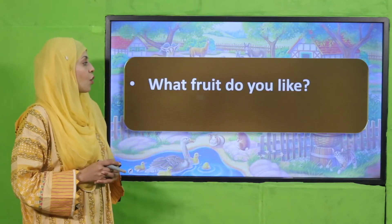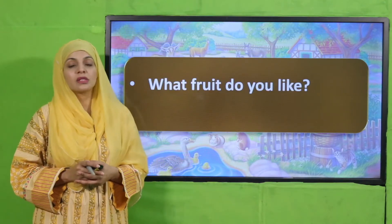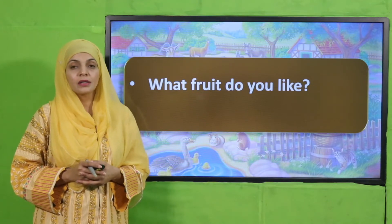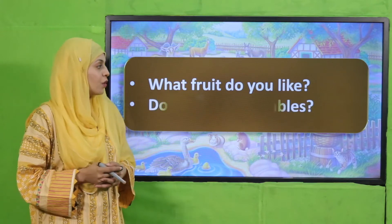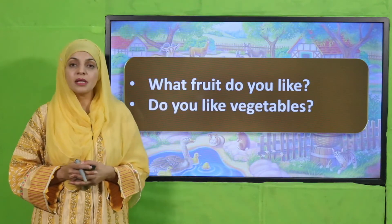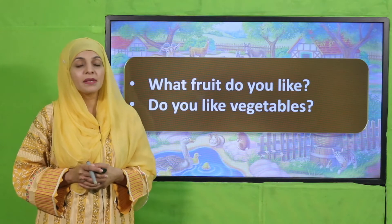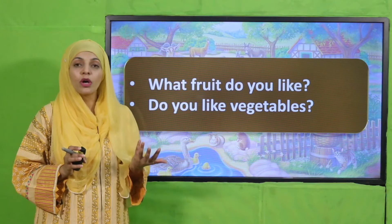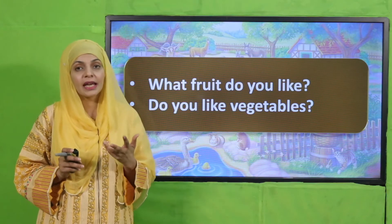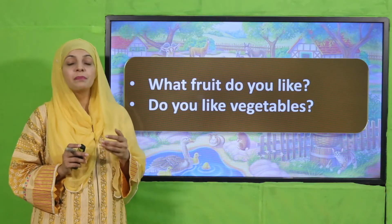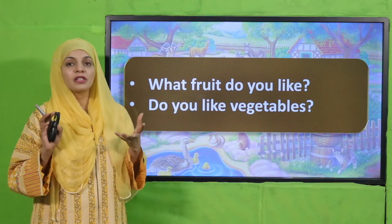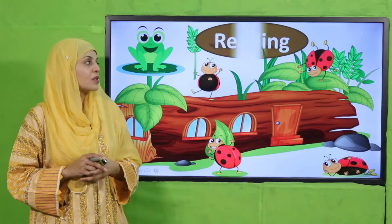Now is the time for pre-reading questions. Listen carefully and then answer. What fruit do you like? What is your favorite fruit? I love watermelon — tell me your favorite fruit. Do you like vegetables? Many children don't like eating vegetables, but vegetables are very healthy for you. I like potatoes, chips, broccoli, carrots, peas, and ladyfinger — these are a lot of vegetables that I like.